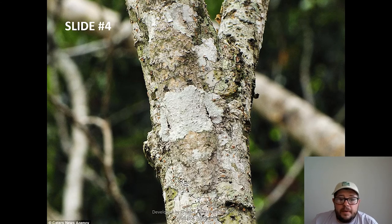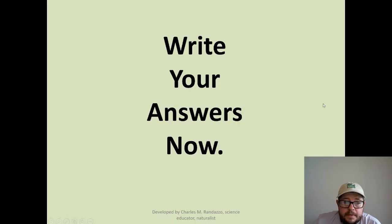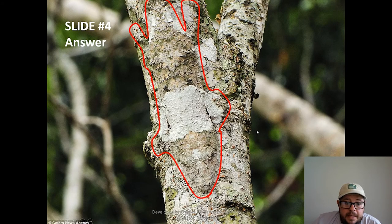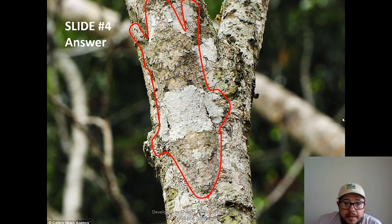This one might be a little harder. Do you see it? If you need more time, pause the video. Did you get it? It was a gecko. His eyes are down below, you can see his tail up top. Look at how well he blends in — you could walk right up to that gecko and not see it if you didn't know what to look for.